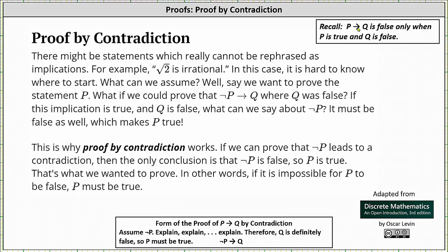Remember, the implication if P, then Q is false only when P is true and Q is false, which indicates if the implication if not P, then Q is true, when Q is false, then not P must be false, which makes P true.